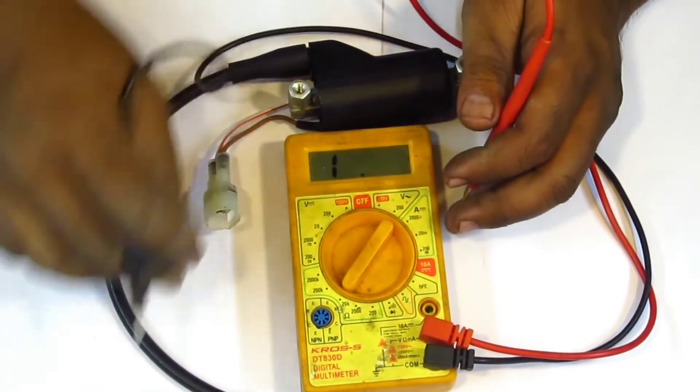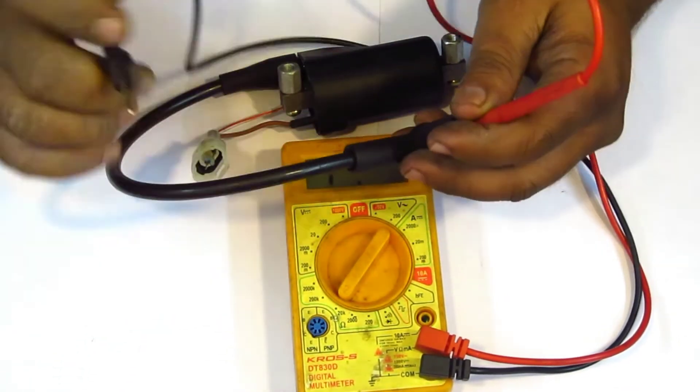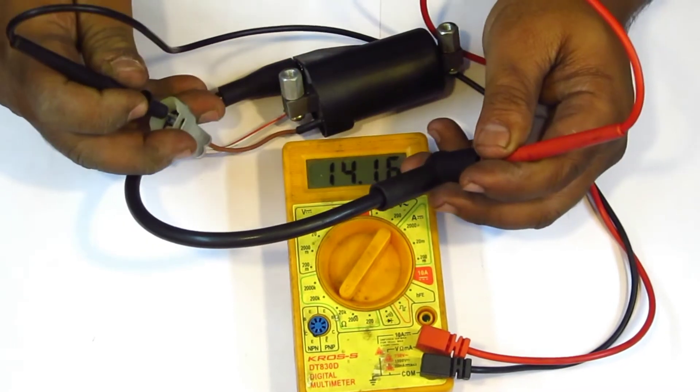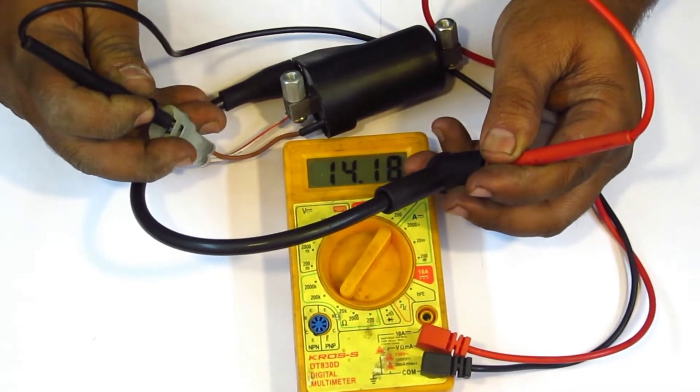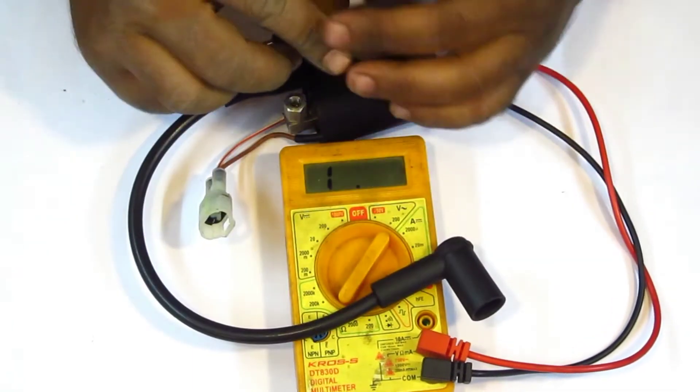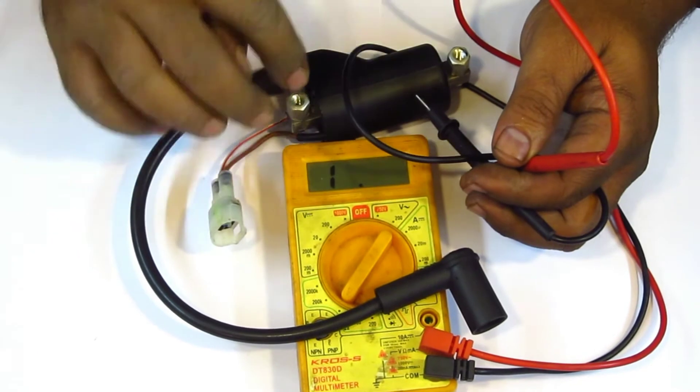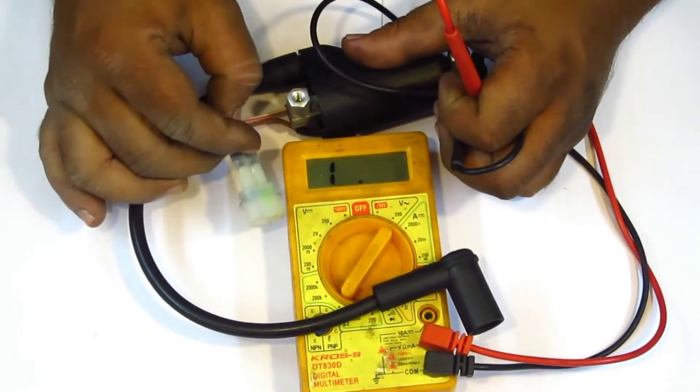So now the primary circuitry I have checked. Now secondary circuitry is like this way. As you can see I'm getting 14.18, 14.19 kilo ohms. That means the coil is perfect.